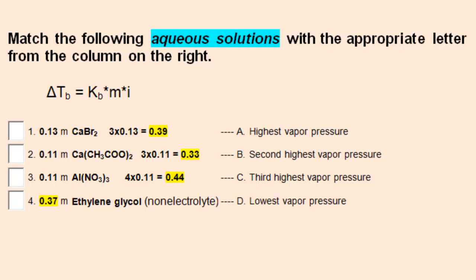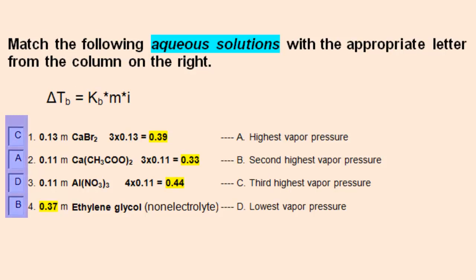Solutions that boil at a higher temperature generally have lower vapor pressures. Solutions that boil at a lower temperature will have higher vapor pressures. Your answers should be the reverse of the previous problem.